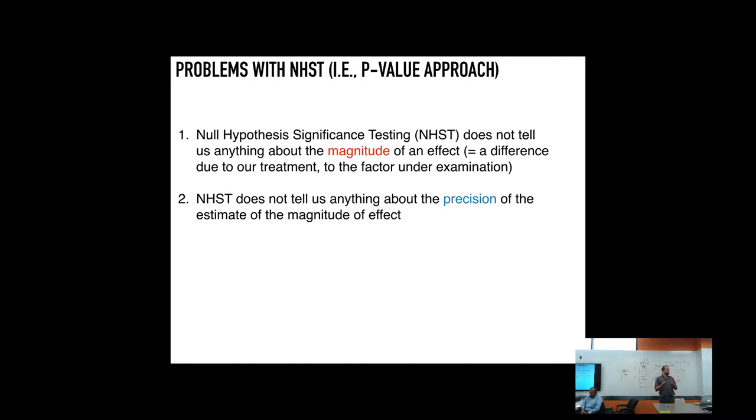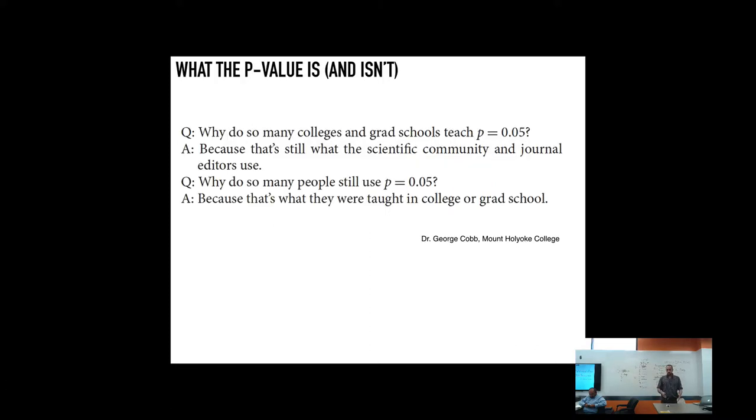So why do we continue to use p-values instead? As educators and researchers, we're doubly responsible here because there's this circular pattern - we teach p-values because we use them, and we use them because we were taught them. There's nothing inherently better about them. There's some value in probabilistic thinking, of course, but we're better off, especially when evaluating evidence and comparing methods, deciding based on the magnitude and the actual ability of different protocols.